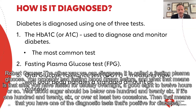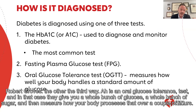The other way we can diagnose it is called a fasting plasma glucose. After you have fasted — usually overnight, a good 8 to 12 hours — your blood sugar should be below 126. If it's 126 or over on at least two occasions, then that means you have one of the diagnostic tests that's positive for diabetes. The third way is an oral glucose tolerance test, where they give you a whole bunch of sugar and then measure how your body processes that over a couple of hours.